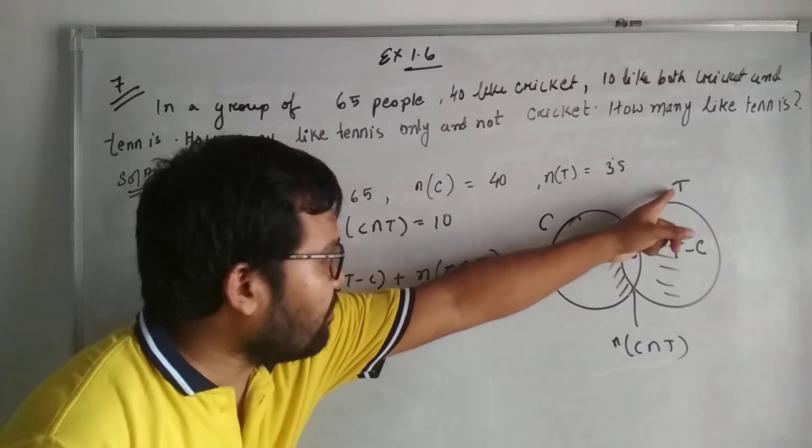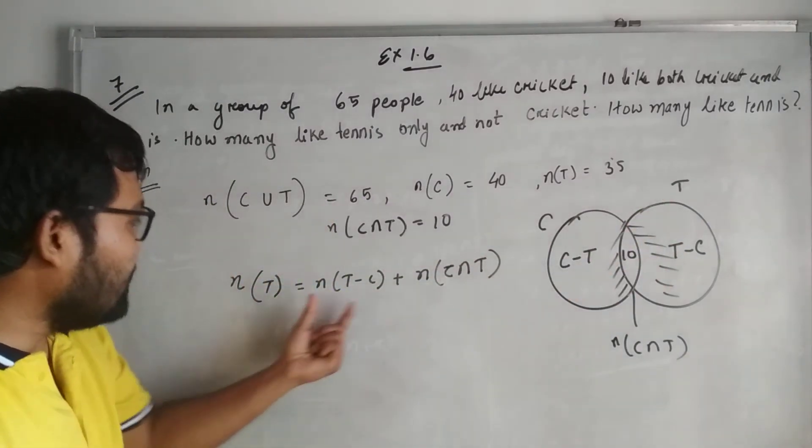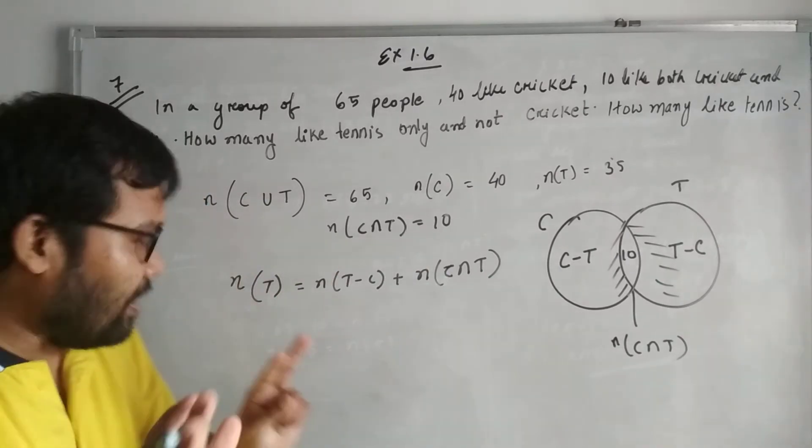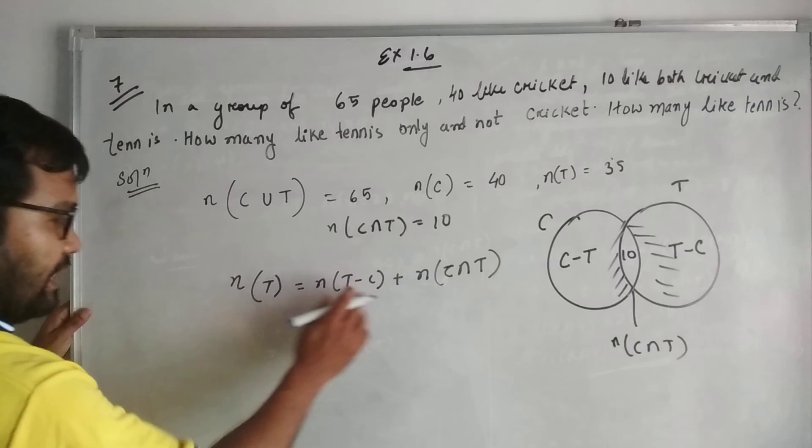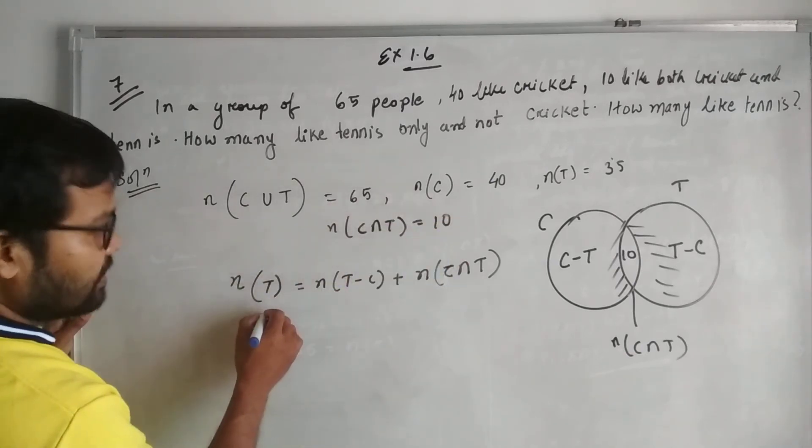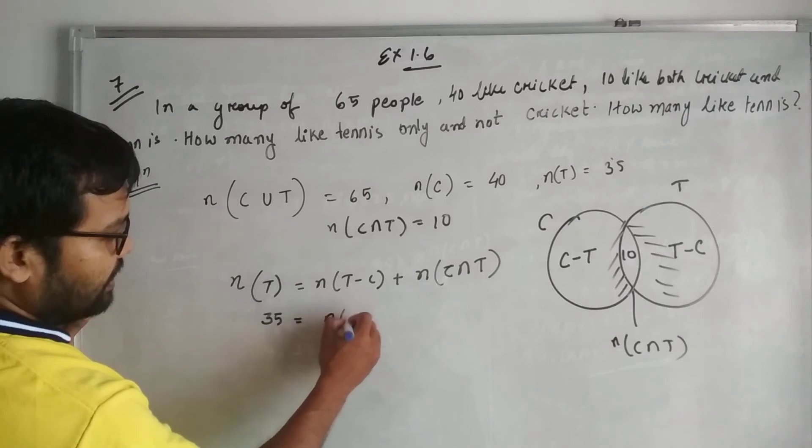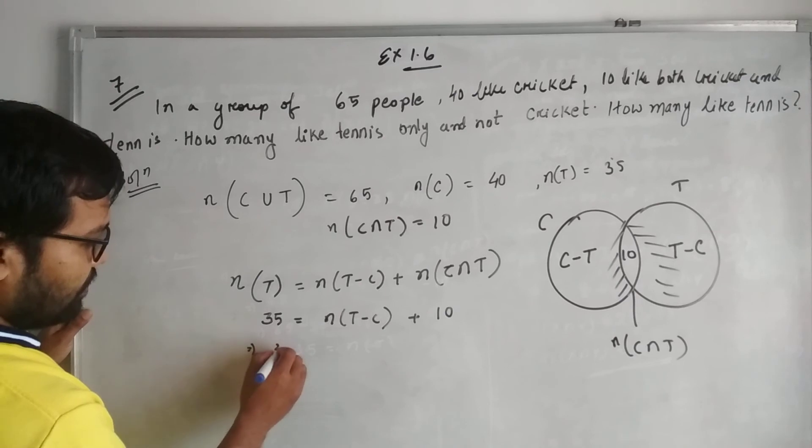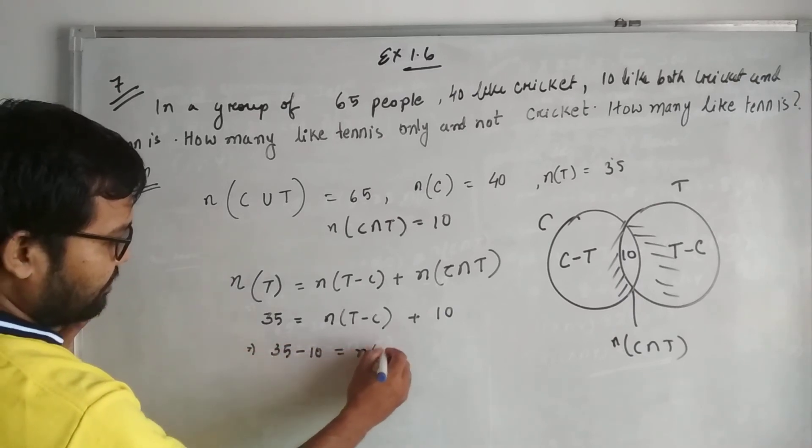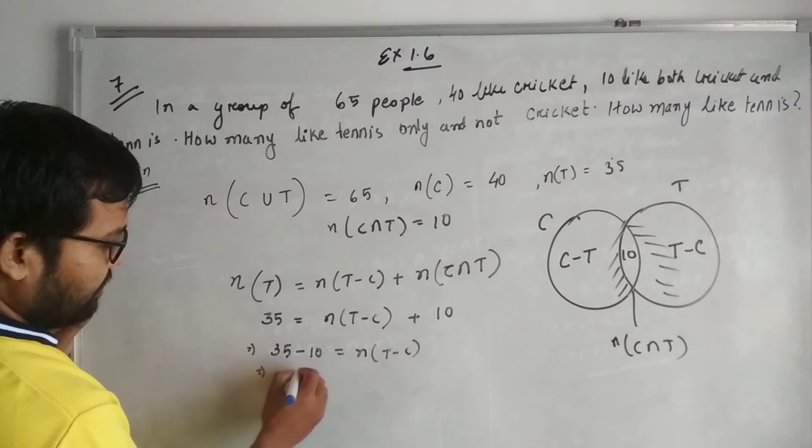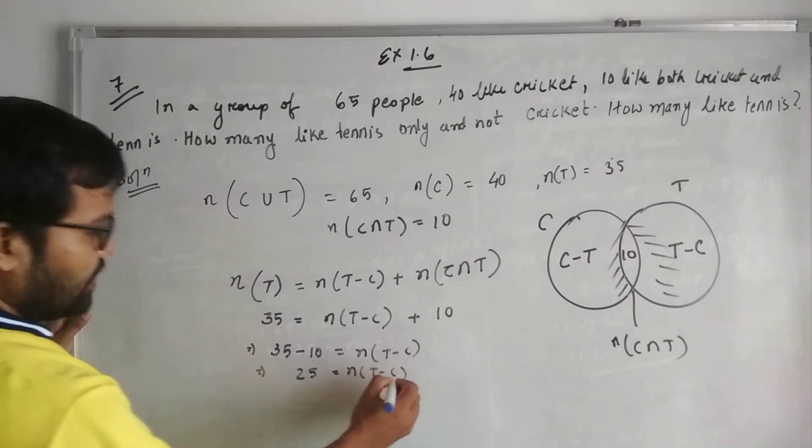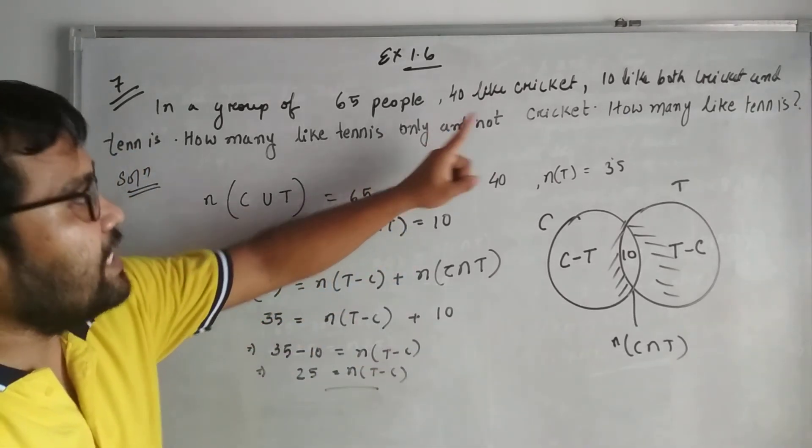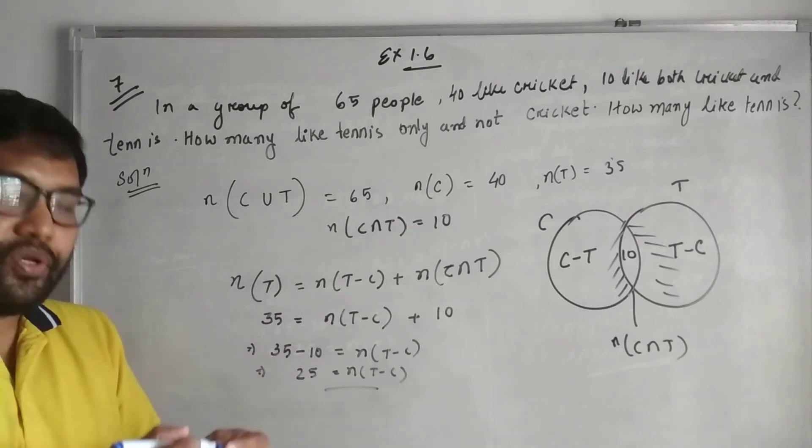Very simple. n(T), the total number of people who like tennis, includes those who like only tennis and those who like tennis as well as cricket. We require T minus C. Here n(T) = 35, and the intersection is 10. So 35 - 10 = n(T-C), which means 25. Therefore, 25 people like tennis only and not cricket.